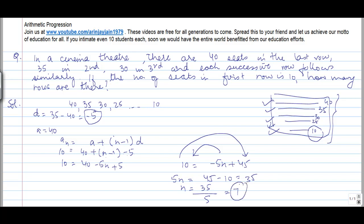So there are 7 rows in all in the cinema theater. So that's how basically you apply arithmetic progressions to kind of arrive at various solutions.